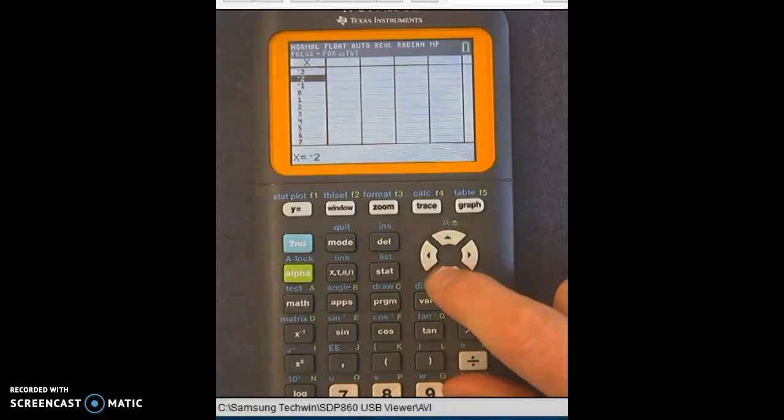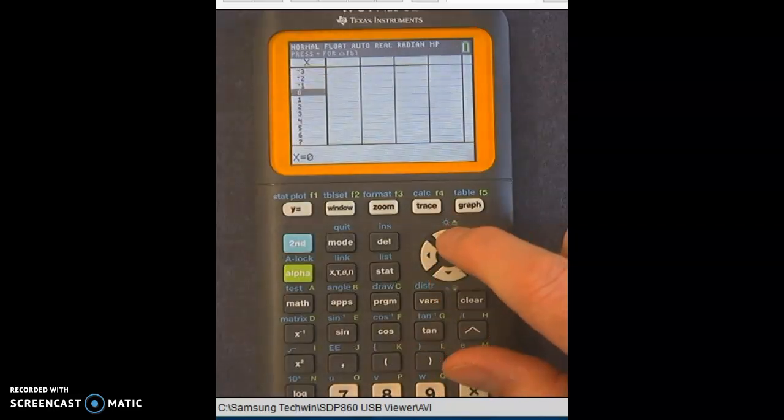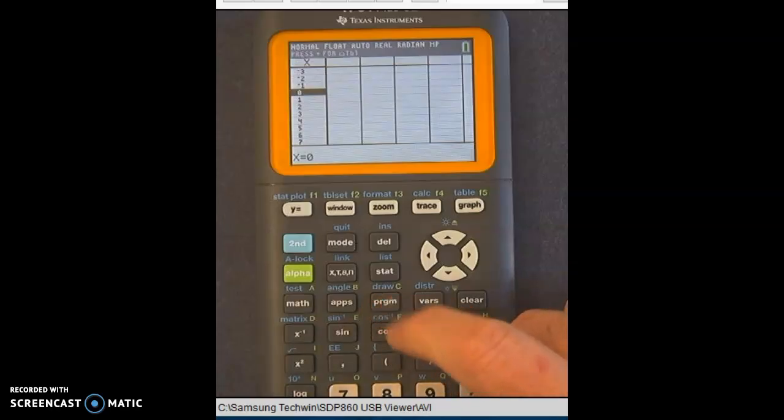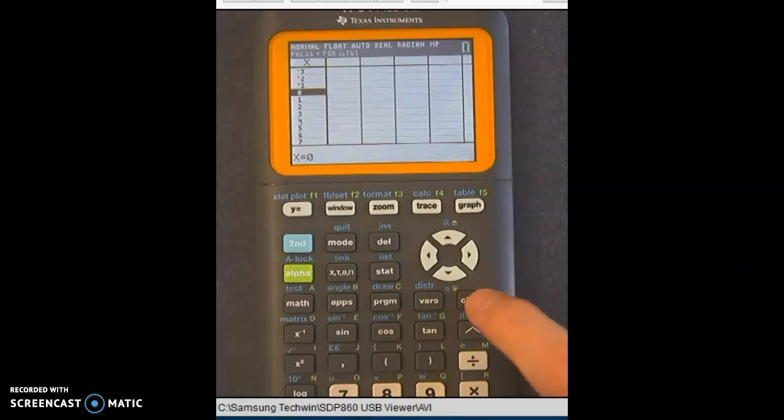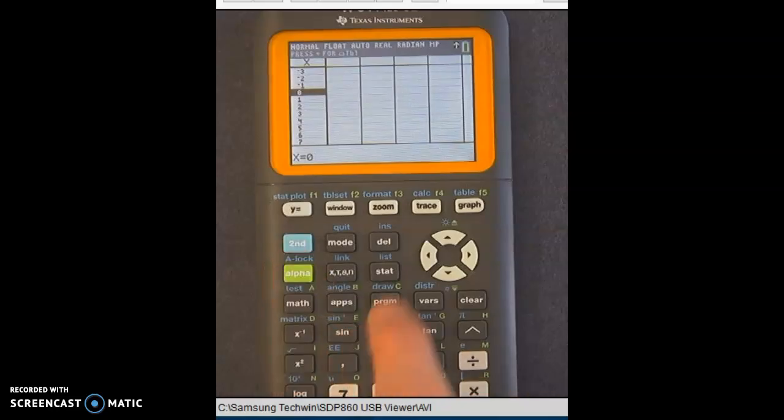To use the tables, we're actually going to have to put equations in that it will calculate the table. So to put our equations in, we're going to hit Y equals. Now, by the way, when you hit clear, it doesn't do anything here. So just as a reminder, if you ever get into something and you don't know how to get out,